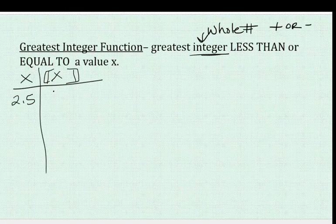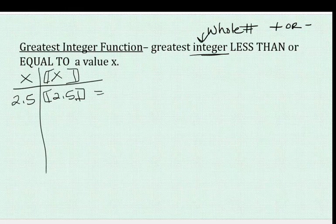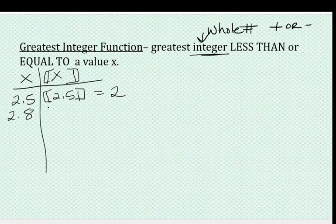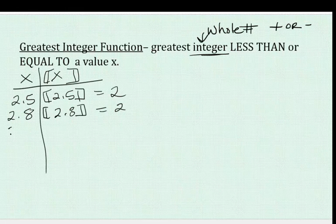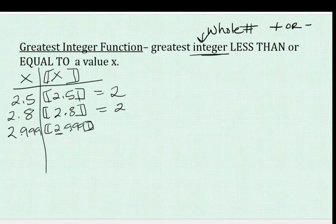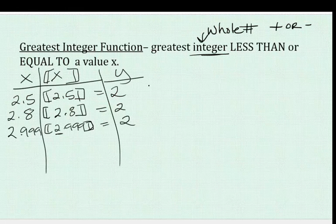If we have 2.5, what is the greatest integer less than or equal to 2.5? The greatest whole number less than or equal to 2.5 would be 2. What if it's 2.8? Same thing — greatest integer less than or equal to 2.8 is still 2. What if it's 2.99999? The rule says the greatest integer less than or equal to that number — it will still be 2. So any decimal behind the 2 is going to ultimately have a y value of 2.